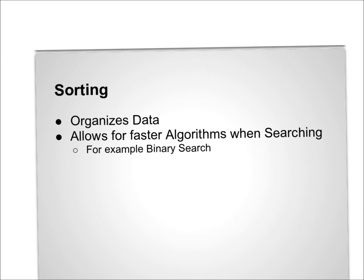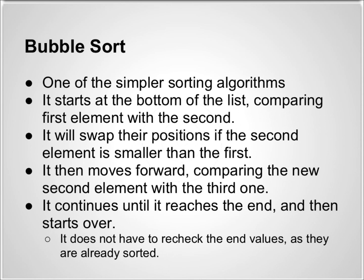Sorting organizes data. It also allows for faster algorithms when performing operations such as searching. For example, if you perform the sorting operation before a binary search, it will make your search a lot easier for finding the element that you want because the list is pre-sorted. Now that we've described the usefulness of sorting, let us move on to Bubble Sort.